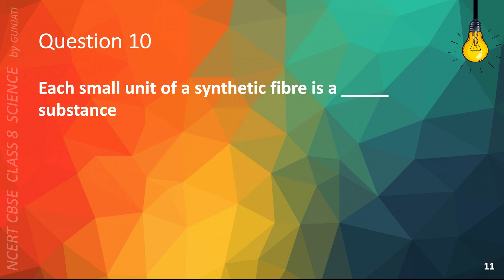Question 10. Each small unit of a synthetic fiber is a blank substance. A. Liquid, B. Solid, C. Chemical, or D. Natural. The correct answer is C. Chemical.